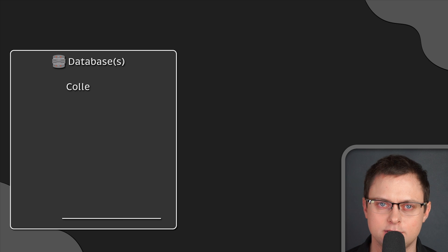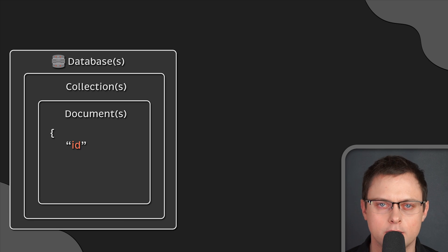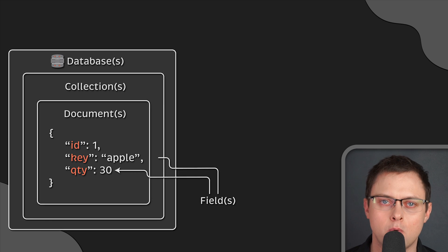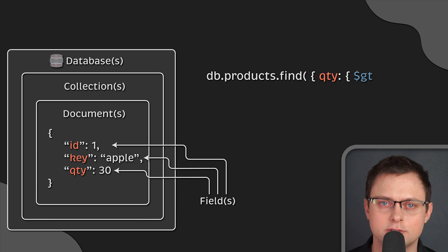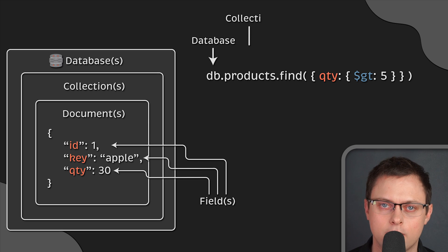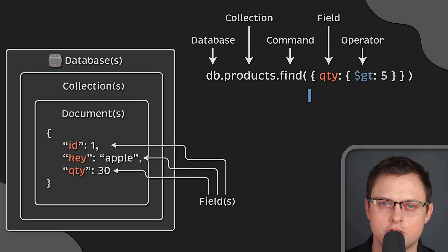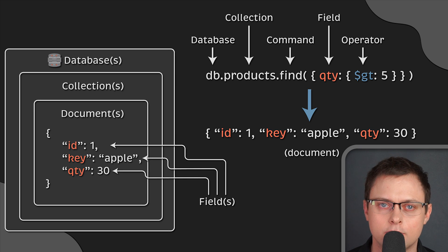A document database is a type of database used to store and query data in JSON-like documents. JSON is a data format that is both human and machine readable. Developers can use JSON documents in their code and save them directly into the document database. The flexible, semi-structured, and hierarchical nature of documents allows them to evolve with the needs of applications.